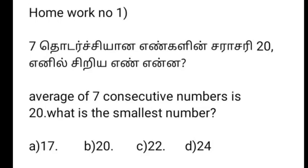Second question: Average of 7 consecutive numbers is 20. What is the smallest number? Option A is 17, Option B is 20, Option C is 22, Option D is 24. This is your homework — if you complete the answer, please leave a comment below.